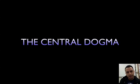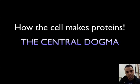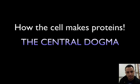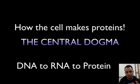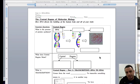Hello students, today we're going to be learning about how the cell makes proteins. This is the central dogma of molecular biology. We talked about how DNA directs the building of the human body and all of your traits. It goes like this: DNA goes to RNA, it goes to protein, and then that protein works in your body to reveal all your traits, or a specific trait.